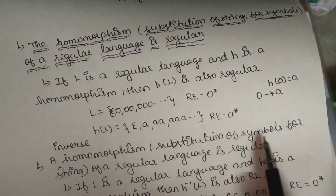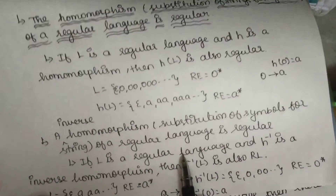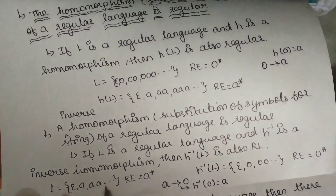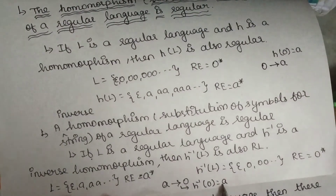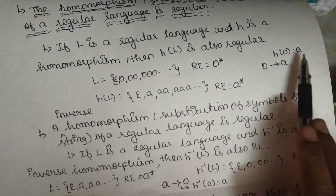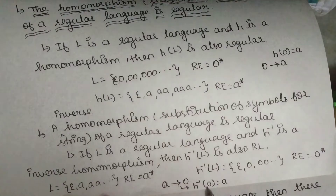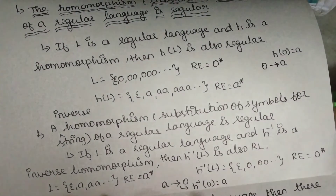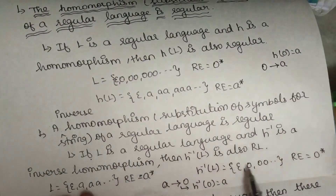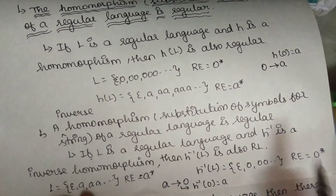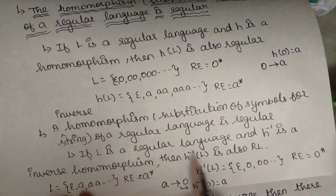That is the inverse homomorphism. So if you apply this — substitution of the strings, substitution of the symbols for the string — if you apply this string: A star, A star, A is the infinite number of times repeat. Inverse homomorphism: if you apply this, A, A star. So if you apply this symbol — then the homomorphism to the string, to the string, inverse — this will be reverse. So the inverse homomorphism of regular language is also regular.